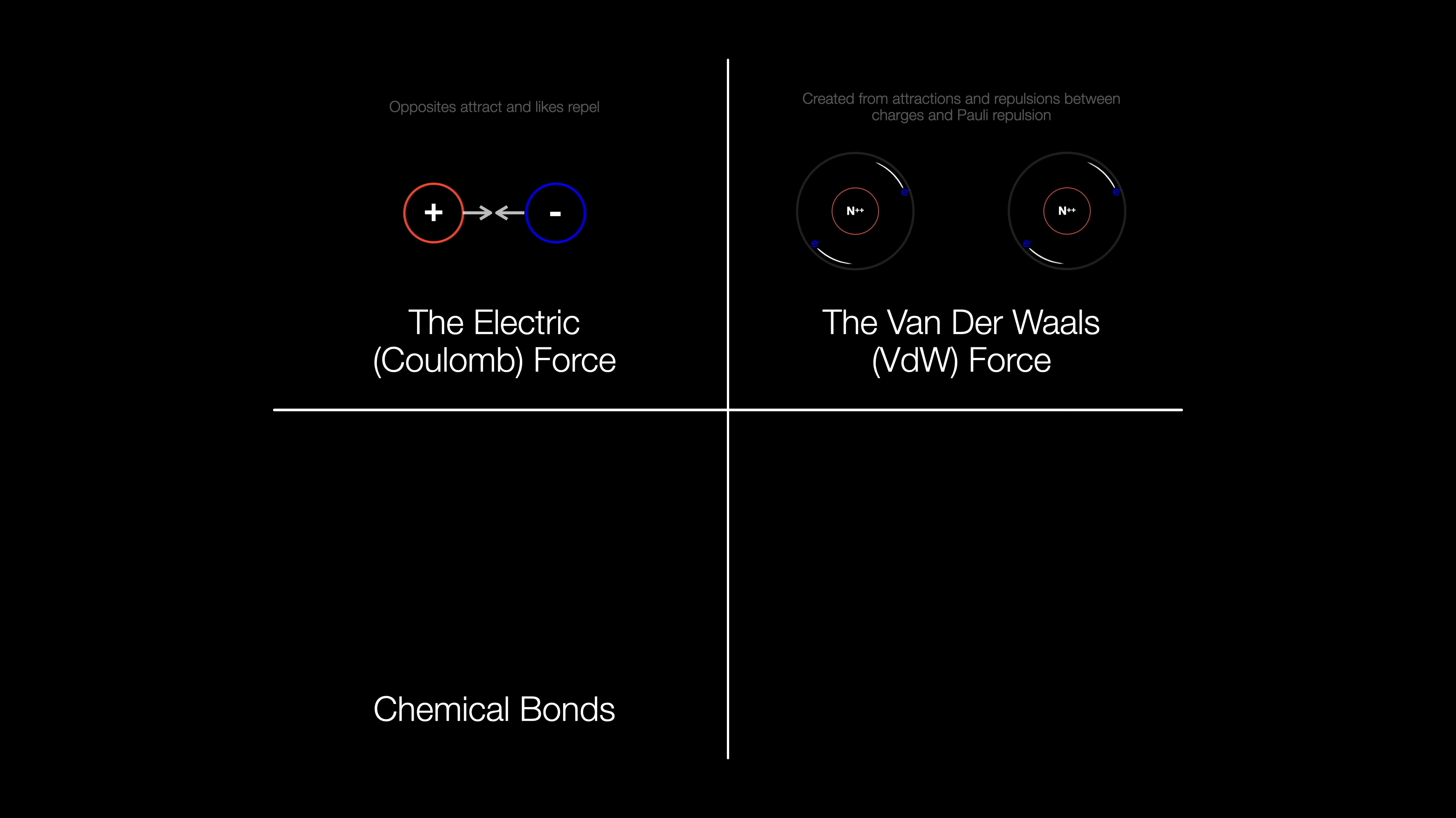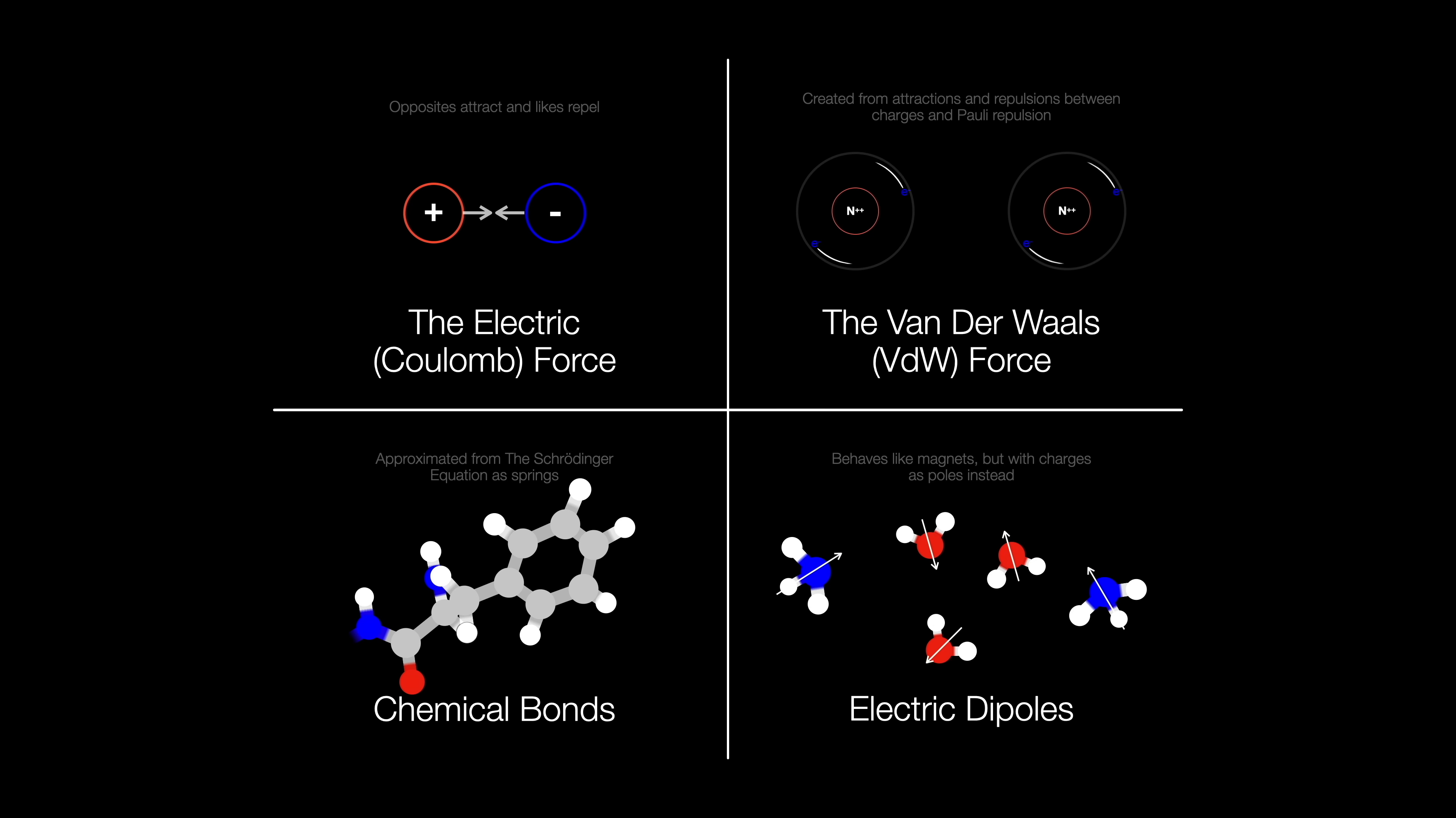The bonds between each atom, created from the overlap of electron probabilities. And when bonds are made, some atoms just like electrons more than other atoms, generating electrical poles similar to magnets.